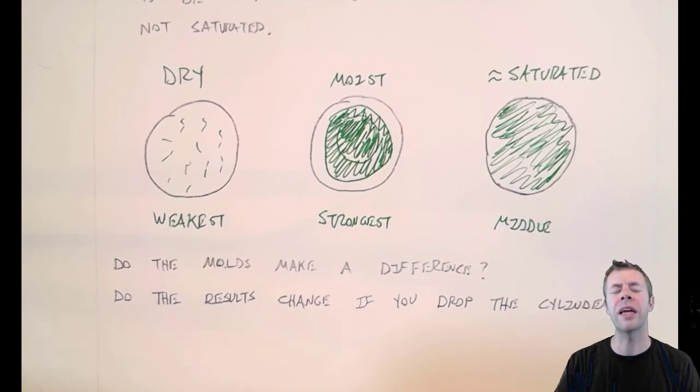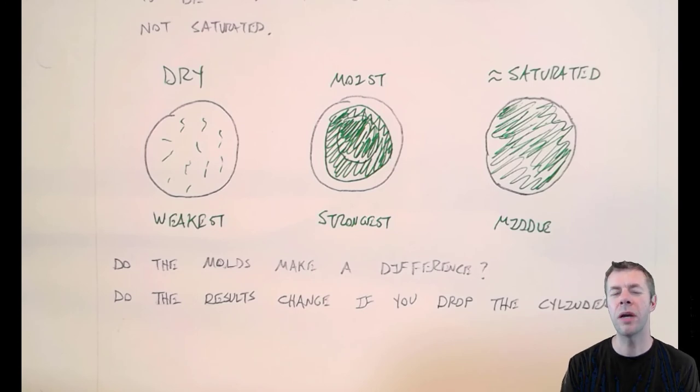So I've got a few other questions at the bottom. Do the molds make a difference? The molds, I mean, this is the thing outside the concrete that holds it in place. Does a plastic mold, does it make a difference compared to a steel mold?